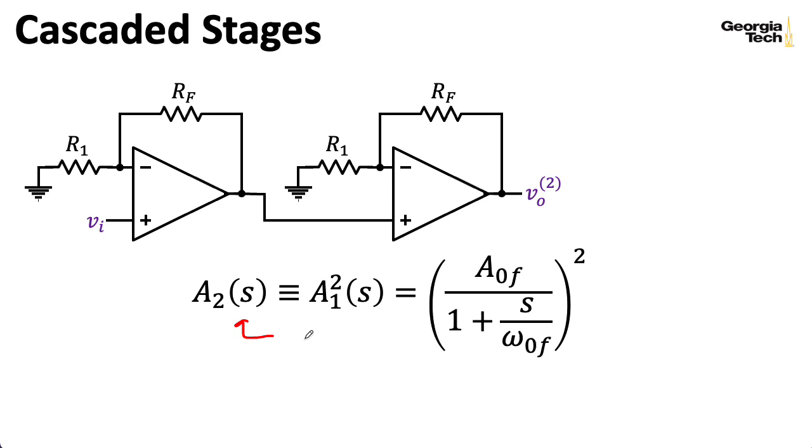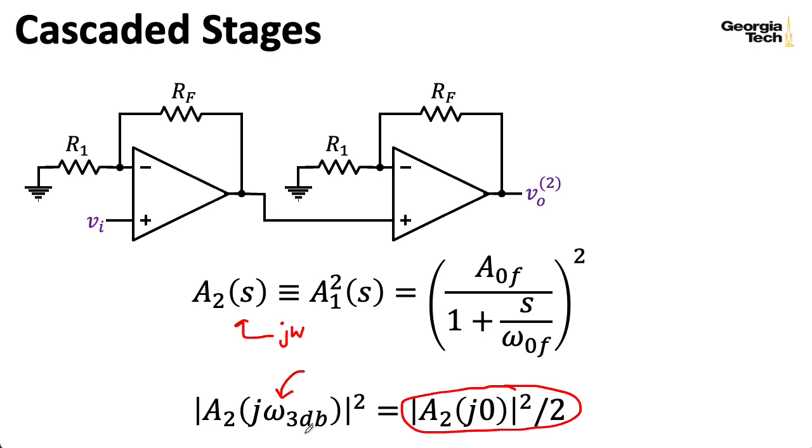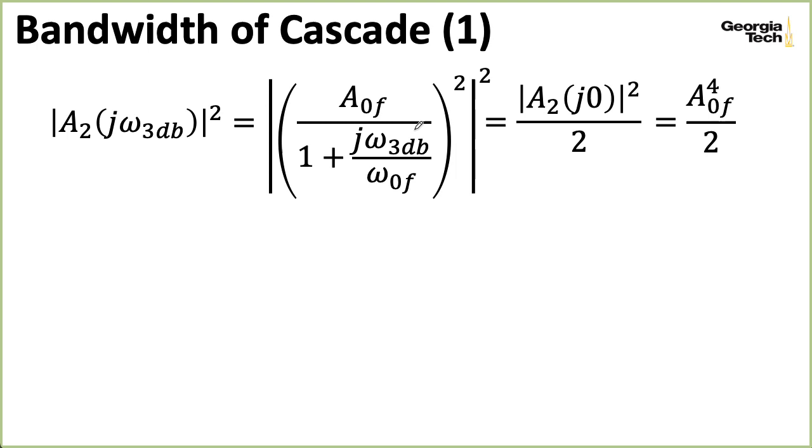So let me plug in j omega for s to get the frequency response, and look at the magnitude squared. So I'm going to ask a particular question. What particular value of omega is going to give me half of the power at DC? So that's three decibels down, so I'm going to call that omega sub 3 dB. So you could think of omega not f as being the omega 3 dB of one stage. So let me plug in our actual formulas for what's on the left and what's on the right. So here on the left, I've plugged in omega 3 dB for omega. And on the right, when I plug in zero for omega, this whole denominator goes away, and I just wind up with a not f to the fourth divided by two.